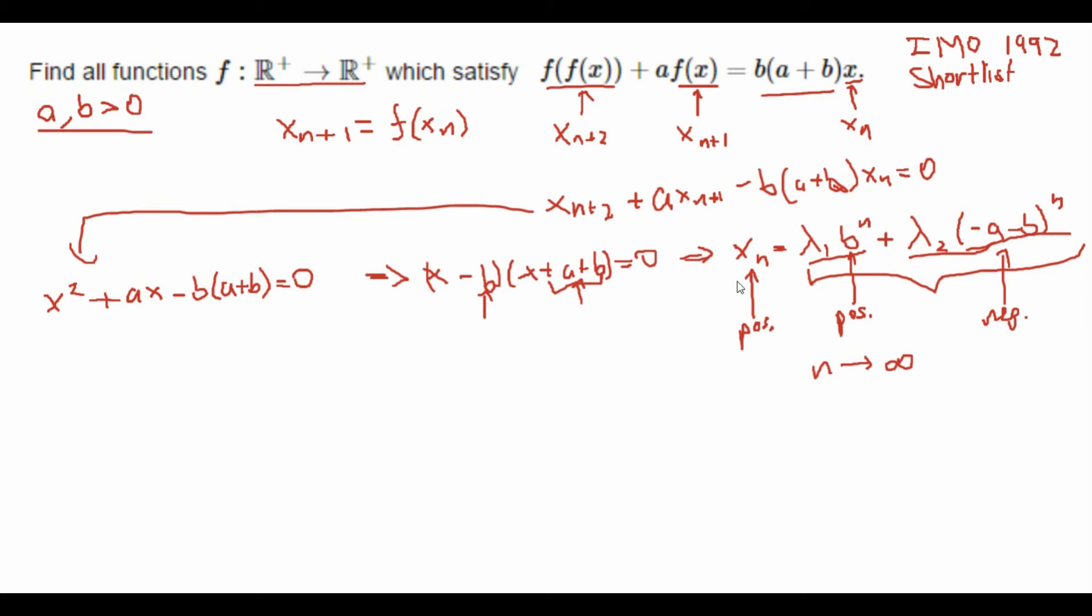But that's a contradiction since we know that x_n is always positive. So what does this tell us? This tells us that this λ₂ is actually just equal to zero because that's the only way we can make this entire thing not grow faster than this thing.